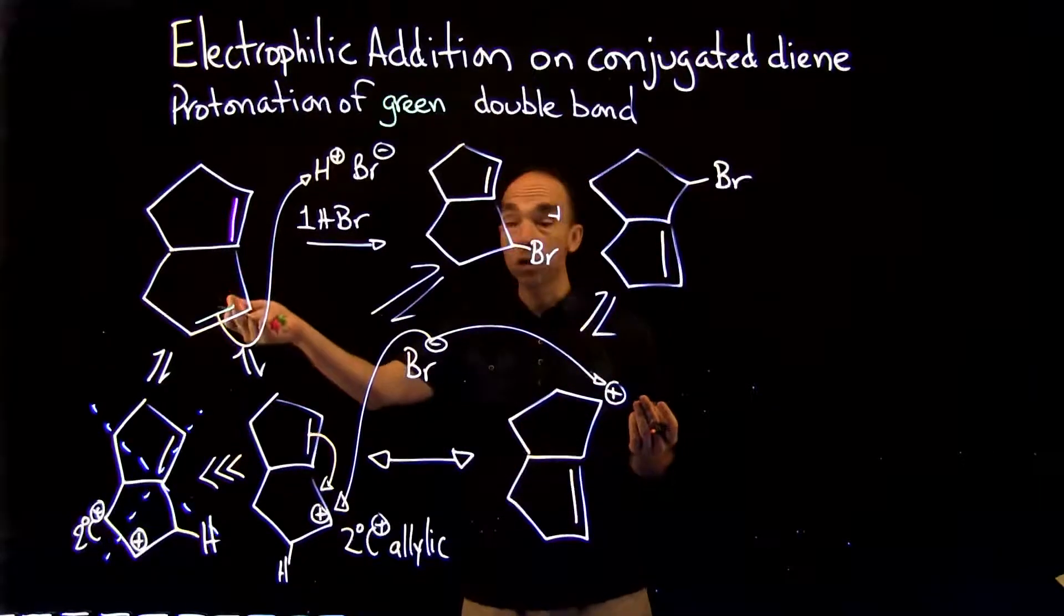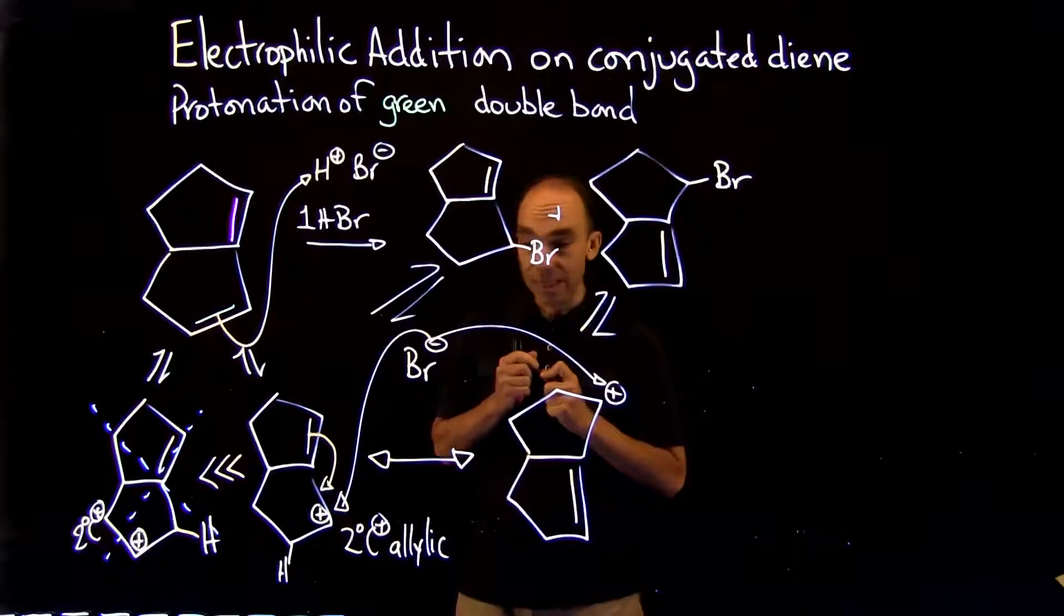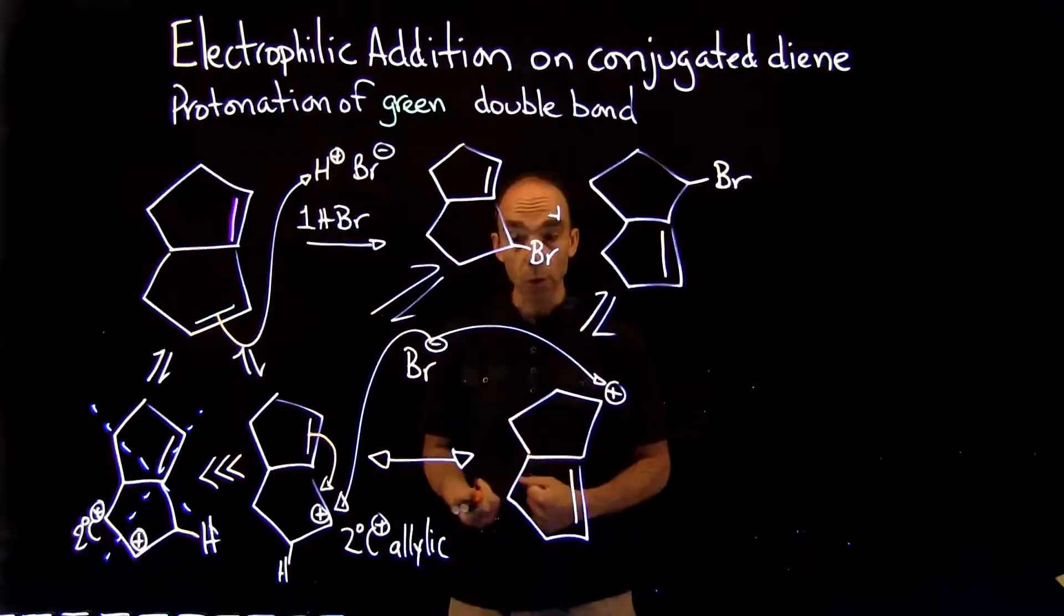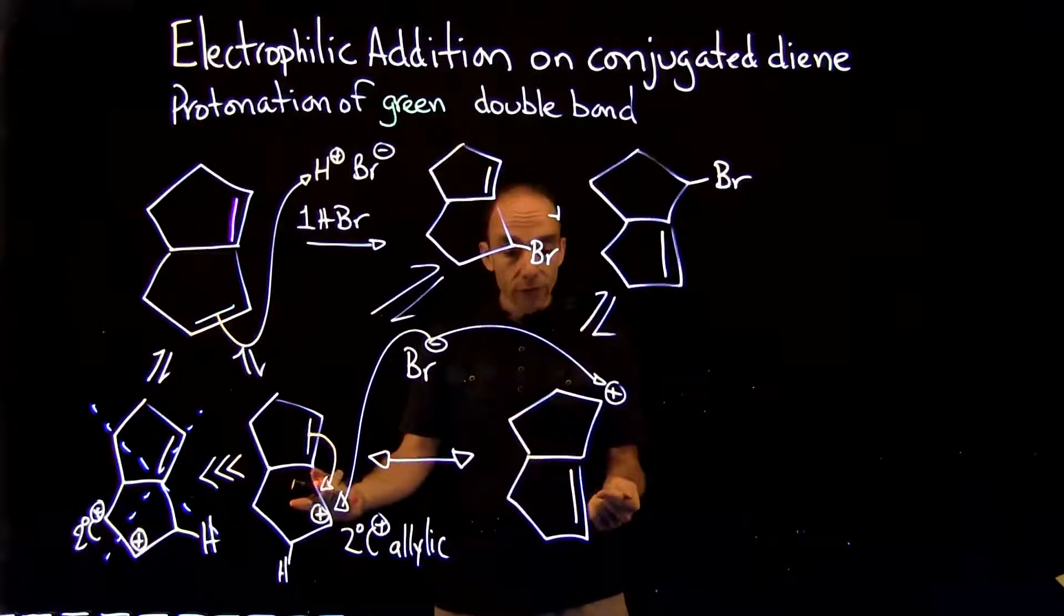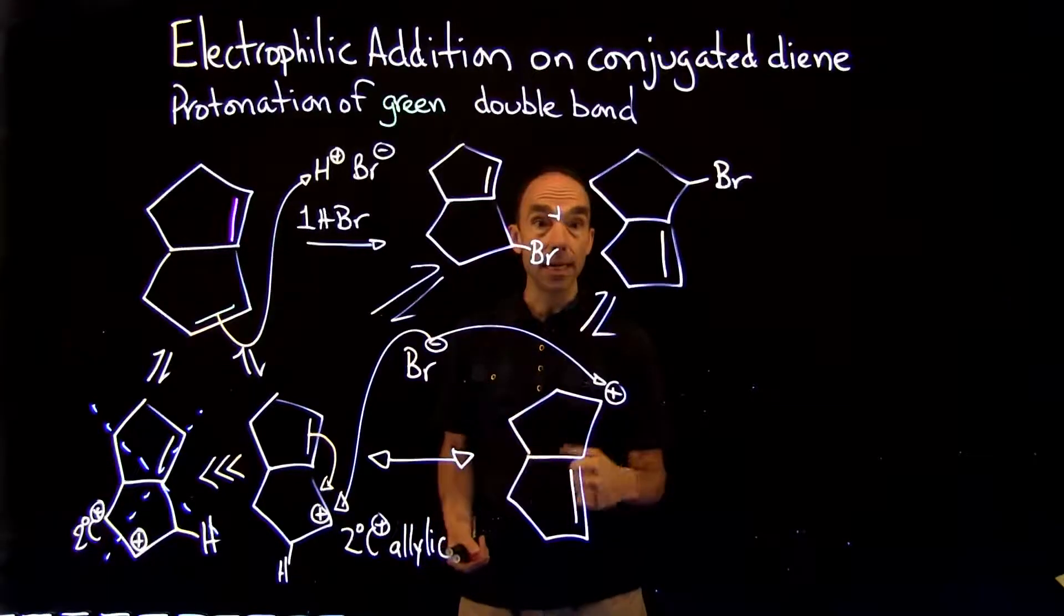That is a coincidence due to the nature of the starting material. That will not always be the case, so that's why it's important to look at the bromination of the two resonance forms for this intermediate.